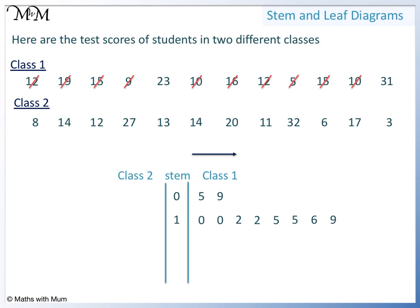Now we look for class 1 values with a 2 in the tens column. We have 23, so we write a 3. Finally, we look for values with a 3 in the tens column. We have 31.